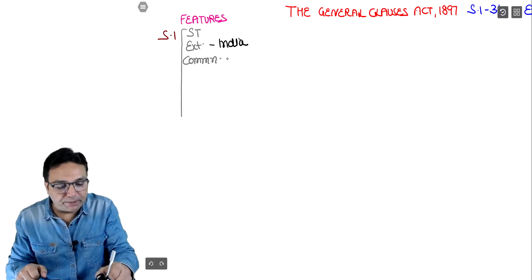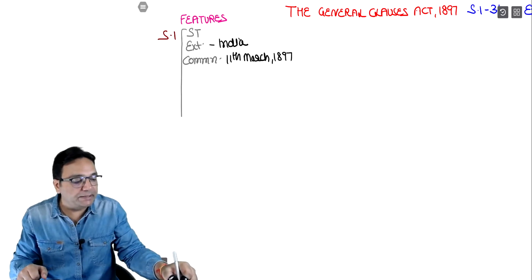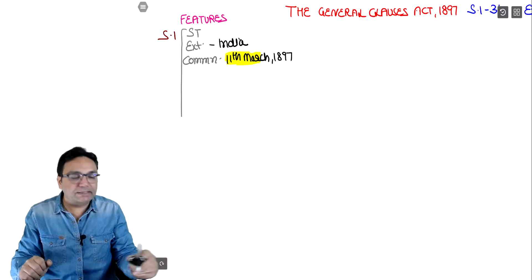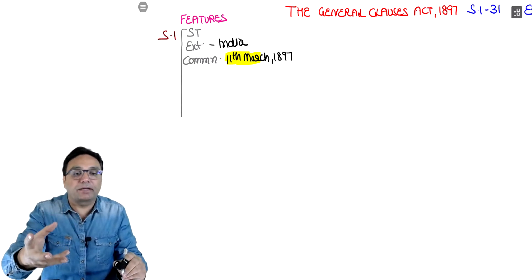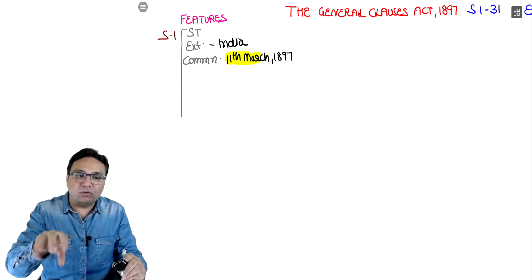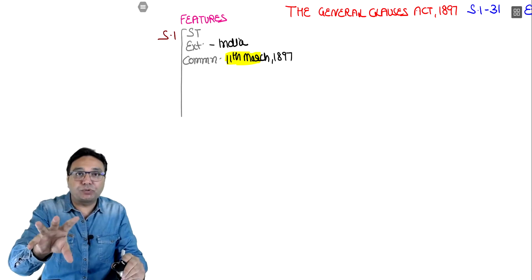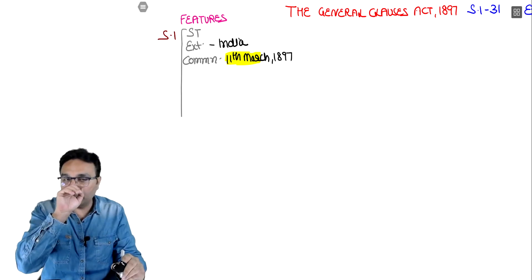The short title is written before you. Extent is understood - it is the whole of India. For commencement, the date is 11th March 1897. But one important thing you need to learn: the General Clauses Act has no separate identity of its own. It was made to help other acts - if other acts don't provide a meaning, come to this act and take the meaning.